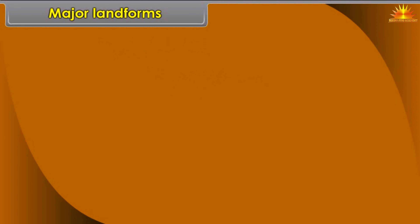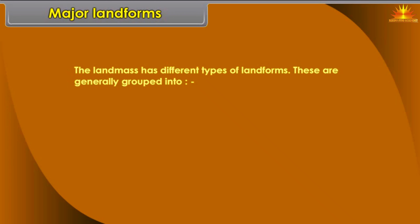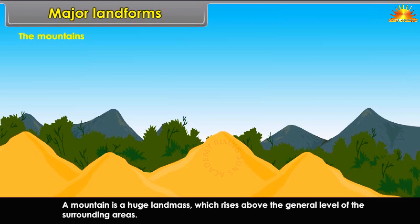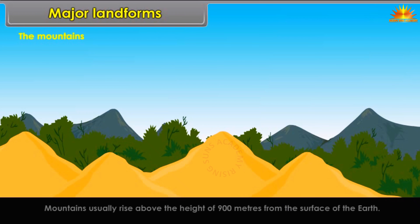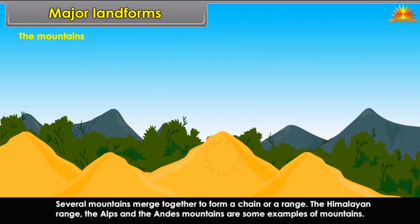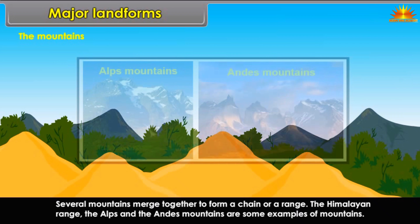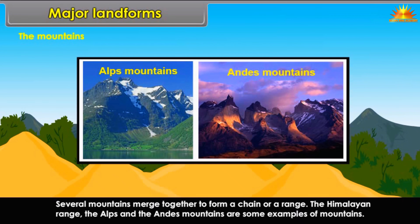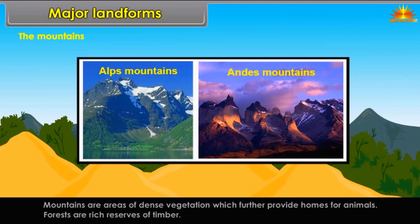The land mass has different types of landforms, which are generally grouped into mountains, plateaus, and plains. A mountain is a huge land mass which rises above the general level of the surrounding areas, usually above 900 meters from the surface of the earth. Several mountains merge together to form a chain or a range. The Himalayan Range, the Alps, and the Andes Mountains are some examples. Mountains are areas of dense vegetation which provide homes for animals, and forests are rich reserves of timber.